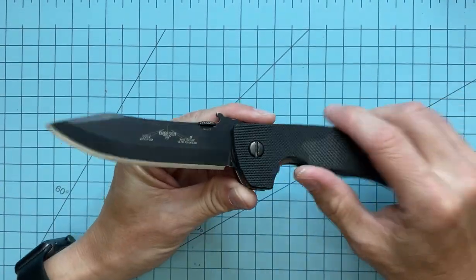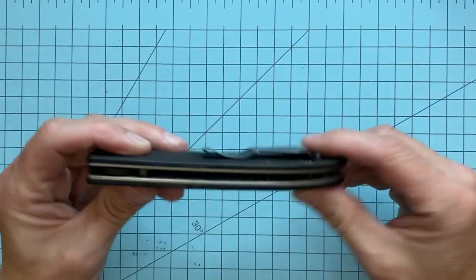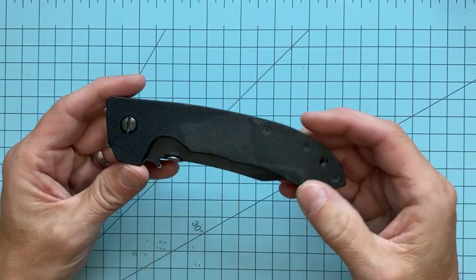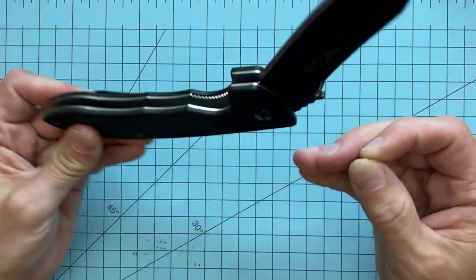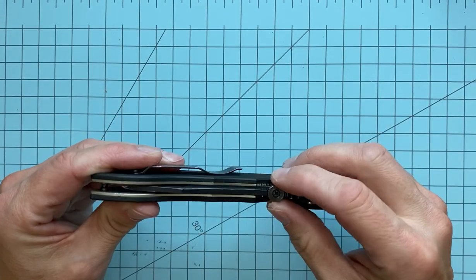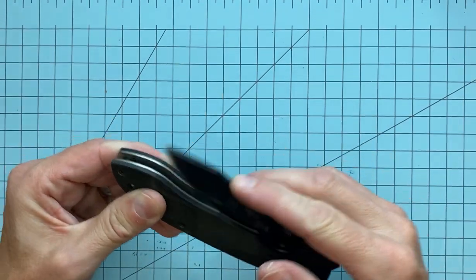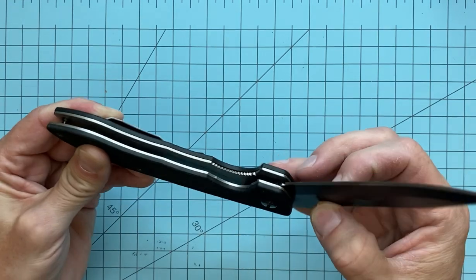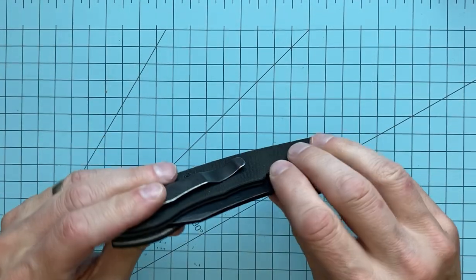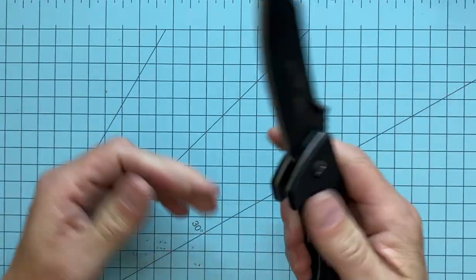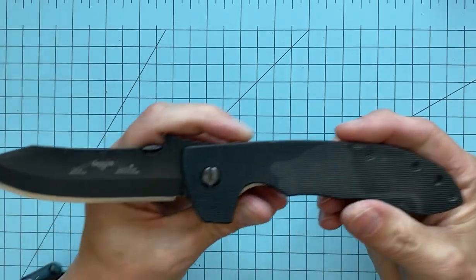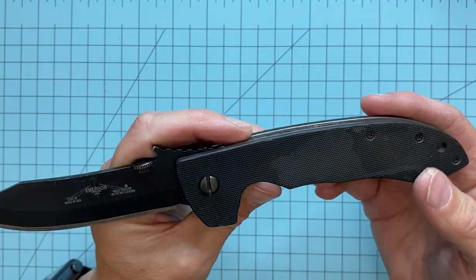This is an older, not super old, but older CQC8 sent to me by a buddy of mine on Instagram. He's been checking out the Emerson's that I've had, and he's had this one for a while, and he's trying to get the action a little bit better on it. He had asked me to do a video on how to tune Emerson's. He's like, I got a CQC8 that's not really doing what I want it to do. So I said, why don't you send it to me? We'll make that the video. And so he went ahead and sent it to me. So I appreciate that.